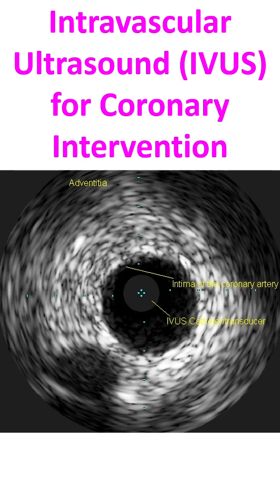Coronary Intravascular Ultrasound (IVUS) equipment consists of an IVUS catheter, pullback device, and the imaging console. If lesion lengths have to be assessed, motorized pullback is required. For assessing lesion morphology, a manual pullback can also be done.